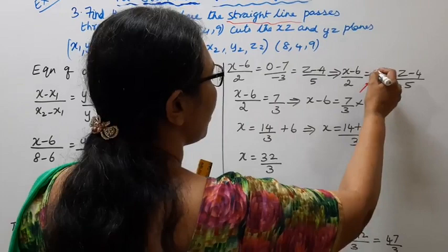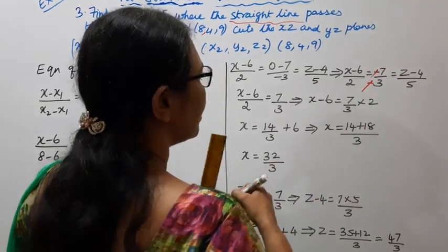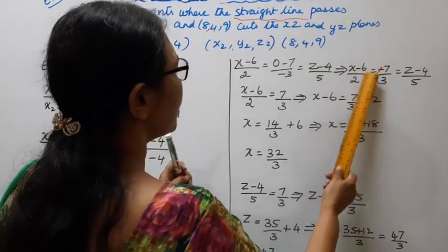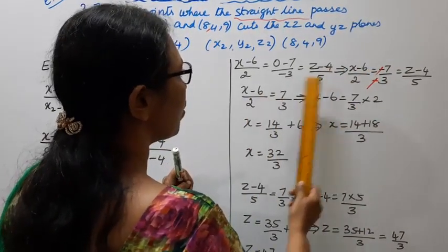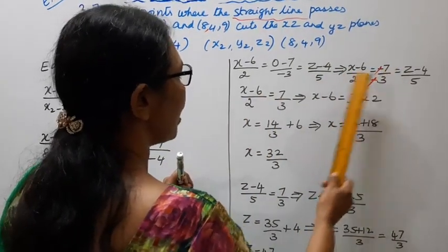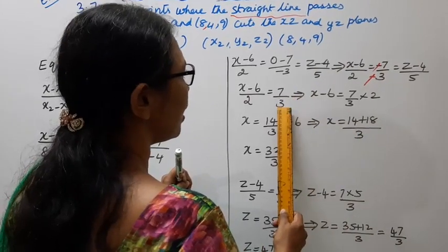The minus signs cancel. So x minus 6 by 2 equals 7 by 3.